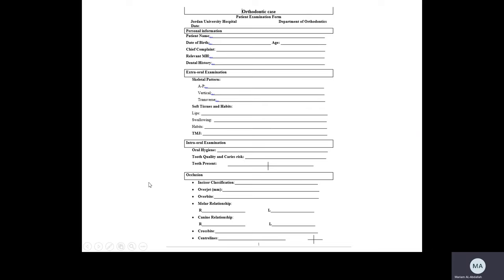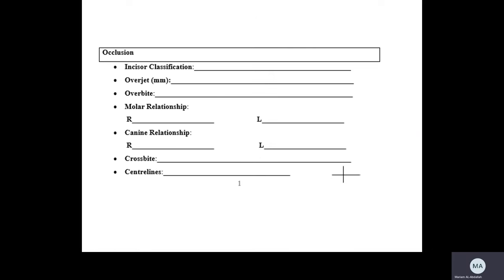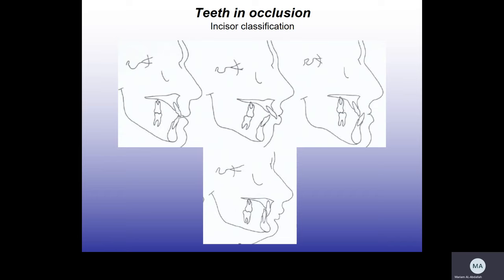Now we come to the occlusion. We need to document the incisor classification, overjet, overbite, molar relationship on right and left, canine relationship on right and left, crossbite, and centerline. The incisor classification is the relationship between the lower incisal edge and the cingulum plateau of the upper incisors. Class I: lower incisal edge occludes at or immediately below the cingulum plateau. Class II division 1: lower incisal edge occludes posterior to it with increased overjet. Class II division 2: lower incisal edge occludes posterior with upper incisors upright or retroclined.